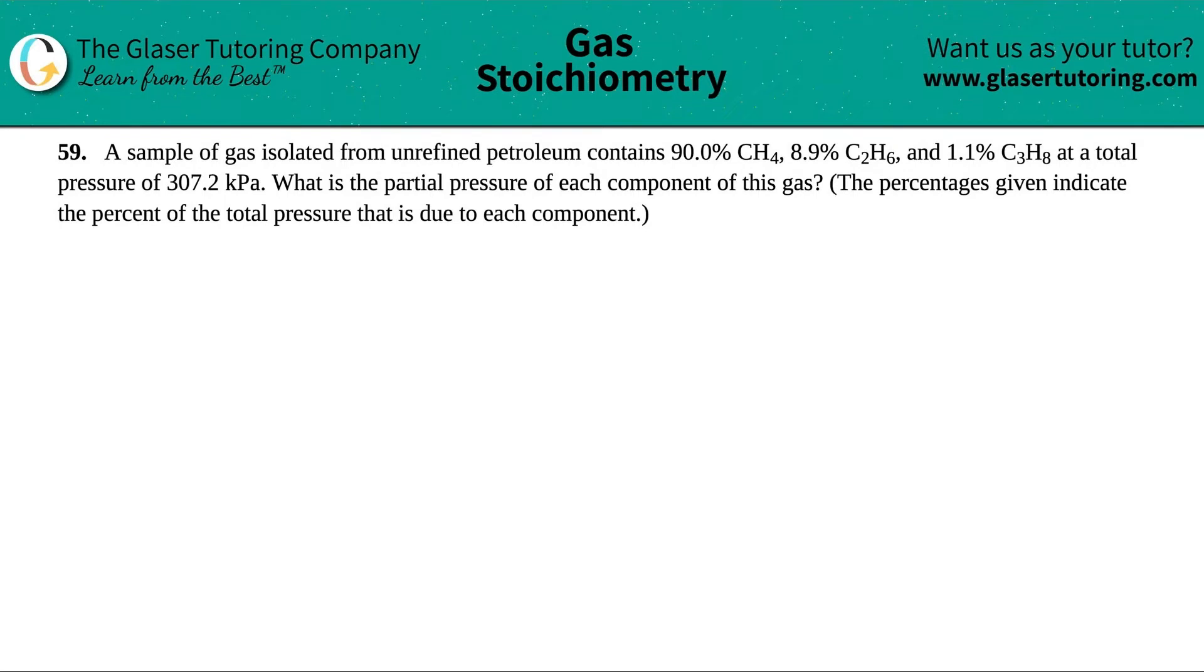Number 59. A sample of gas isolated from unrefined petroleum contains 90.0% CH4, which is methane, 8.9% C2H6, which is ethane, and 1.1% C3H8, which is propane, at a total pressure of 307.2 kilopascals. What is the partial pressure of each component of this gas? The percentages given indicate the percent of the total pressure that is due to each component.